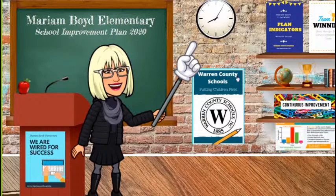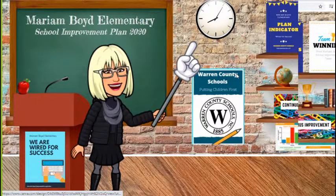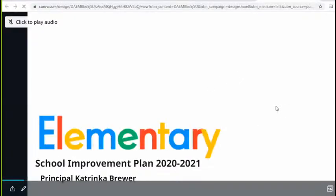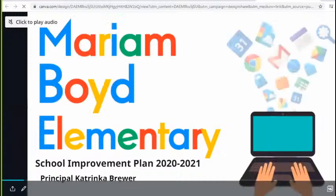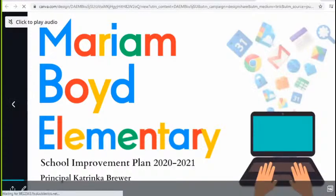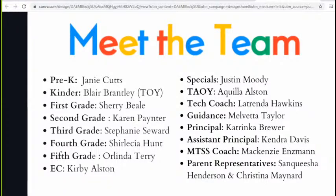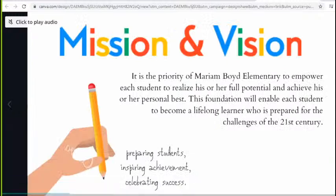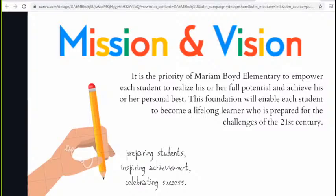When they want to click on something and go somewhere, they're going to do just like I'm getting ready to do to go to my slide presentation. Marion Boyd's Elementary School Improvement Plan for 2020-2021. The first thing is our team — this is our school improvement team. As you can see, there are representatives from each grade level, along with our Teacher of the Year, our TA of the Year, our Tech Coach, Guidance Counselor, Principal, Assistant Principal, MTSS Coach, and of course our parent representative. Our mission and vision for Marion Boyd: the mission is the priority of our school to empower students to realize their full potential and achieve their personal best. The foundation will enable each student to become a lifelong learner prepared for the challenges of the 21st century. And our vision is simply: preparing students, inspiring achievement, and celebrating success.